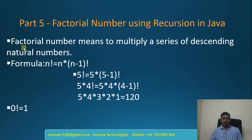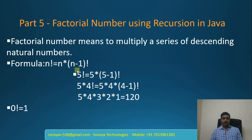What is a factorial number? Factorial number means to multiply a series of descending natural numbers. The formula to calculate the factorial of a number is: n factorial equals n into (n minus 1) factorial. For example, if you want to calculate 5 factorial, 5 factorial equals 5 into (5 minus 1) factorial. Here we need to calculate 4 factorial, so 4 factorial equals 4 into (4 minus 1) factorial.